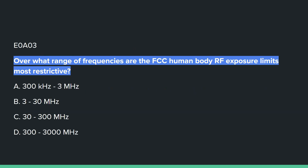E0A03: Over what range of frequencies are the FCC human body RF exposure limits most restrictive? C — 30 to 300 MHz.